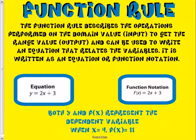All right, so what's the rule? The function rule describes the operations performed with the input to get the range, the output, and it can be used to write an equation that relates the variables. We call this function notation. So here's the equation, y equals 2x plus 3. In function notation, we just replace the y with an f(x). This represents the dependent variable.